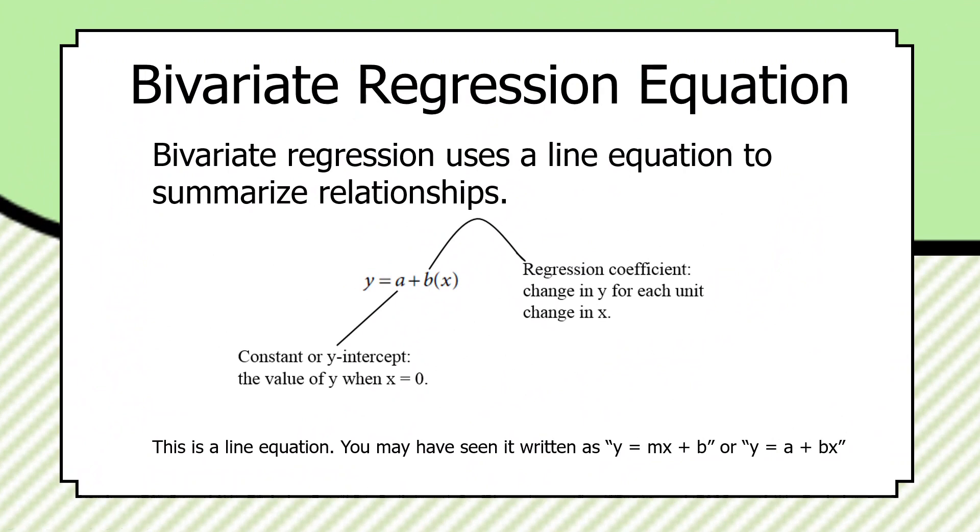A, in this formulation, is the constant or y-intercept. It's the value of y when x is zero. Obviously, if x is zero, the b times x drops out, and we have the y-intercept or the constant.